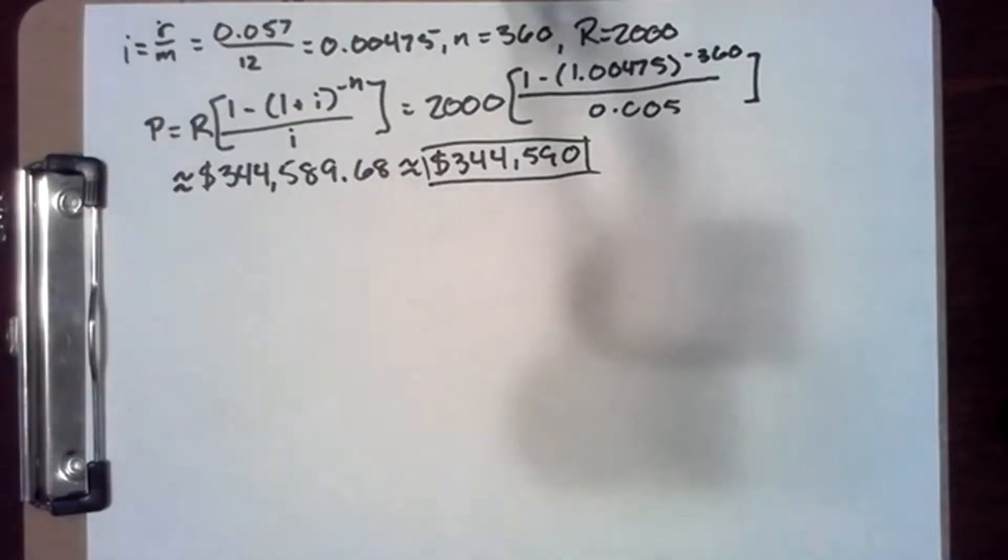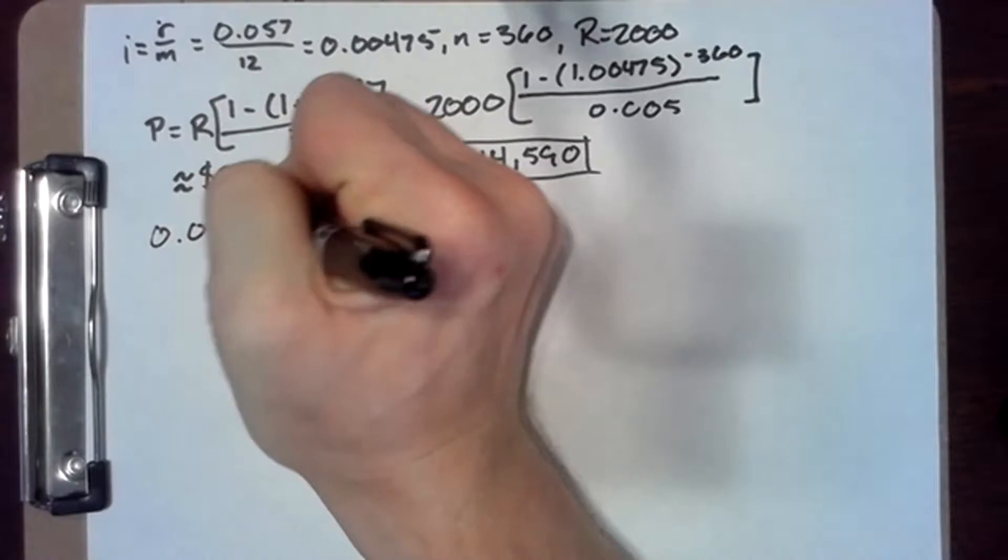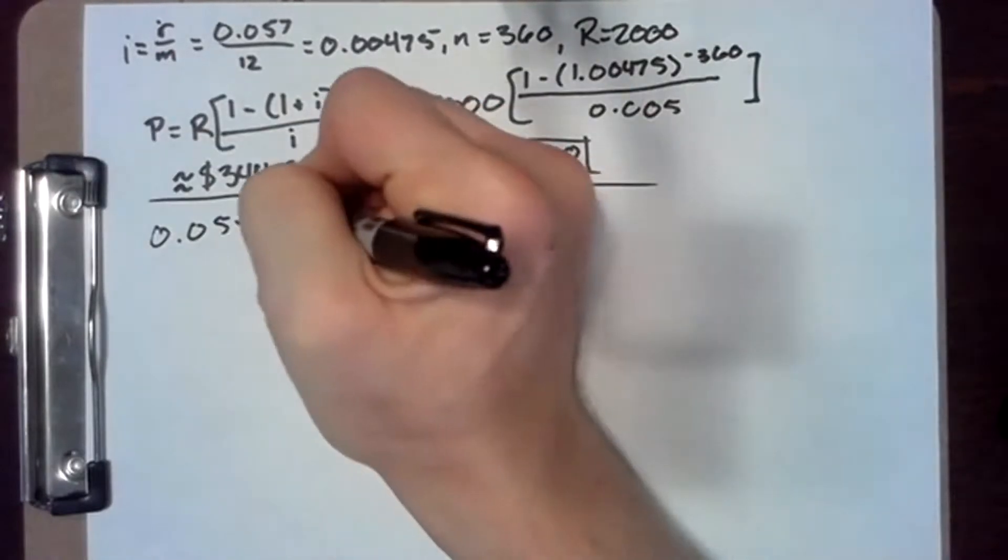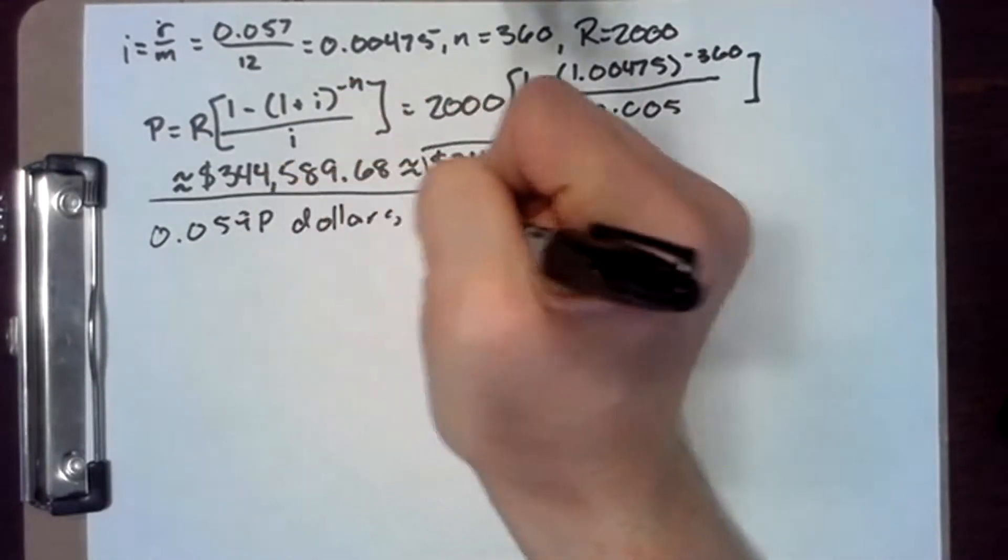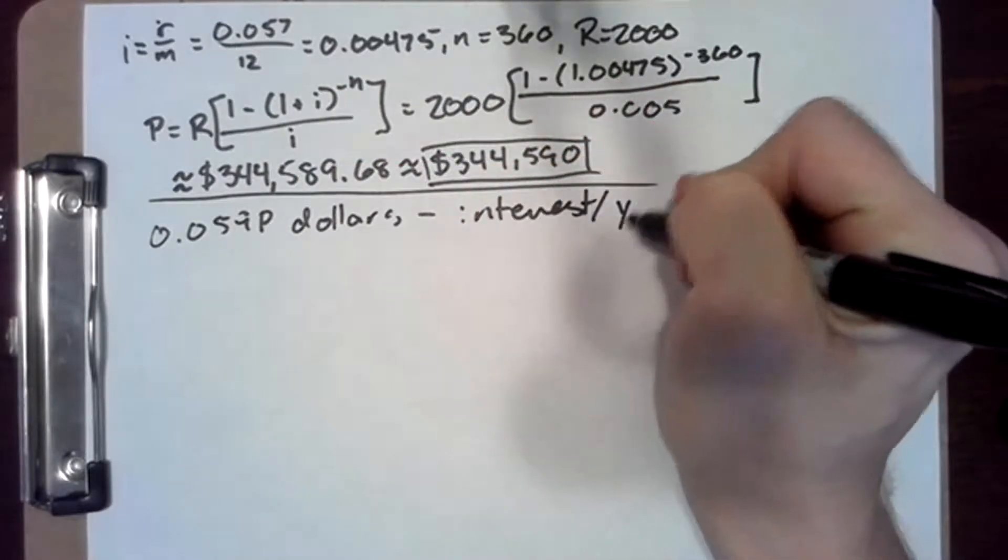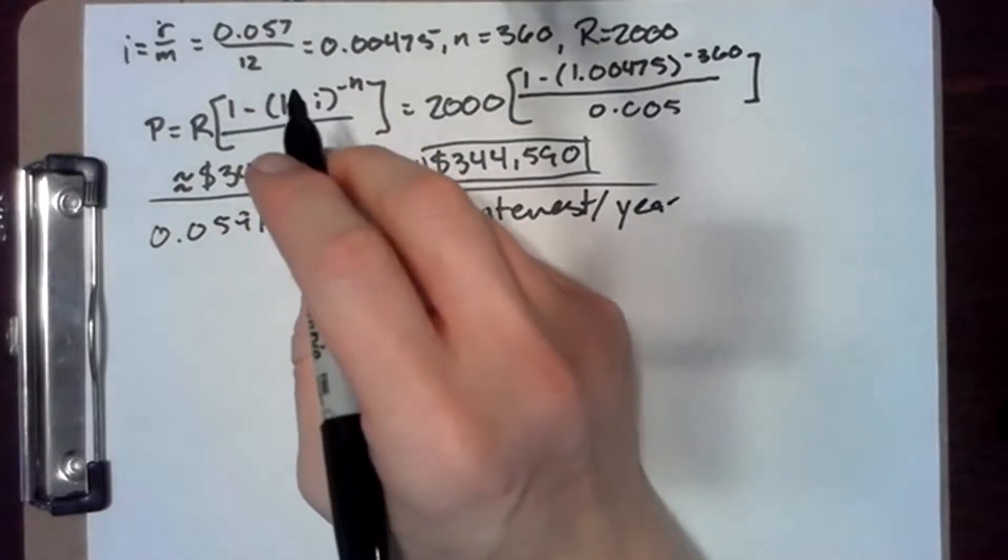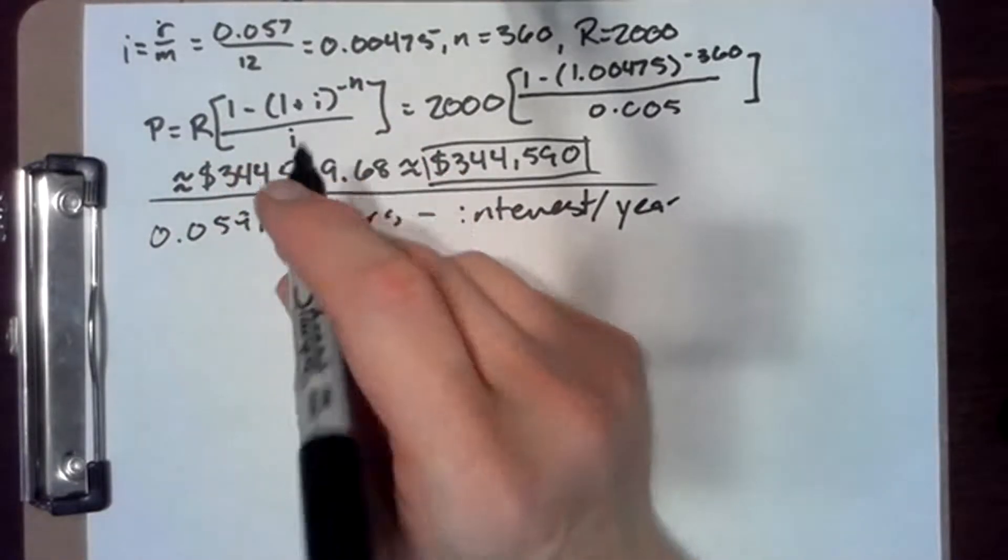If instead they accept the interest-only loan, then the interest per year on their loan is 0.0594P dollars. But this is equal to their payments for the year, which are 12 times $2,000.